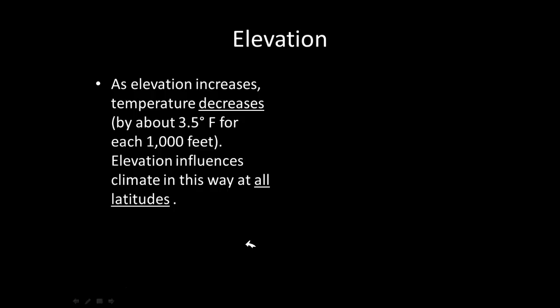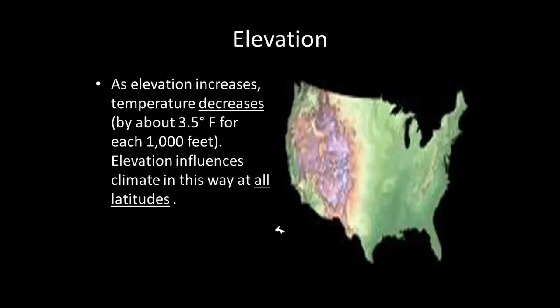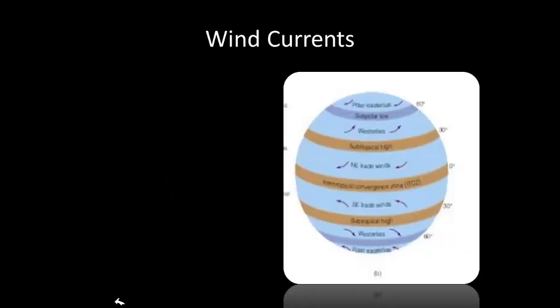That brings us to the next factor affecting climate: elevation. The simple thing to remember is that as your elevation increases, your temperature decreases. If you've ever visited a mountain region, you'll know that as you go higher into the mountains it becomes colder and colder — even if it's summer at the base, it can feel like winter higher up. This applies across all latitudes: no matter where you are, as elevation increases, temperature decreases.